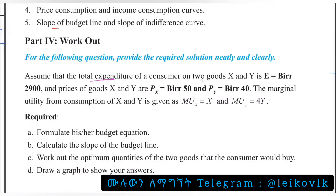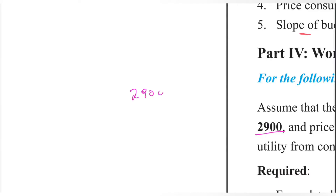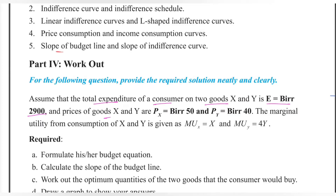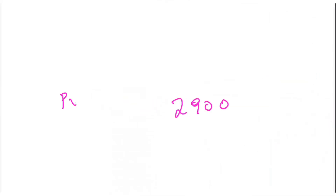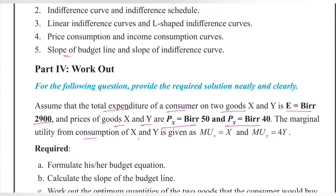Assume that the total expenditure of the consumer on two goods x and y is e equal to 1. The income is the value of x, and the prices of goods x and y are given. The marginal utility from consumption of x and y is given as marginal utility x and marginal utility y.